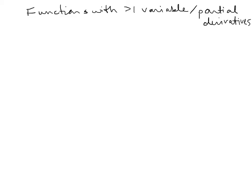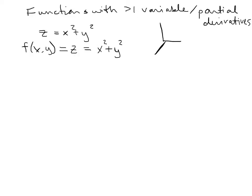We've already talked about functions with more than one variable a bit because we've already graphed them. For instance, a function with more than one variable: we could say that z equals x squared plus y squared. That's a function with two different variables, so that is a function of x and y. A function of x and y is equal to z — think of that as the height, with an x-y plane as the base. This ends up looking like a paraboloid.